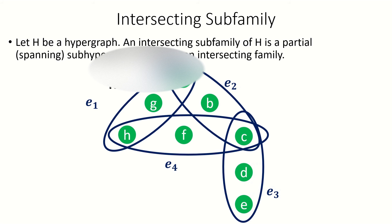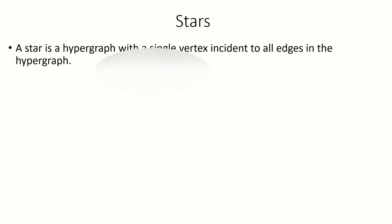Here's an example of a hypergraph H, and here is an intersecting subfamily H prime. A star is a hypergraph with a single vertex incident to all edges in the hypergraph.